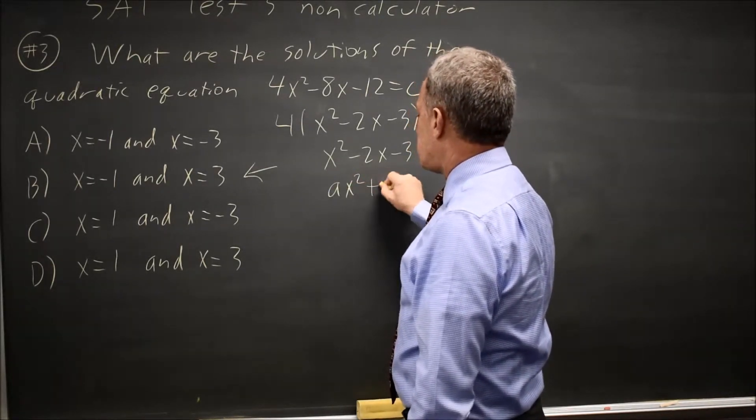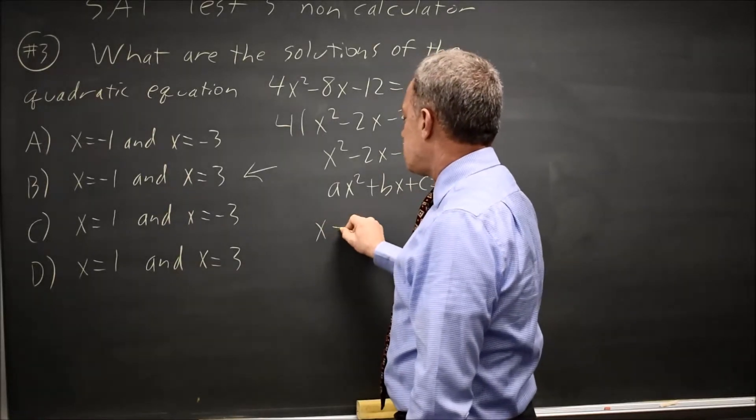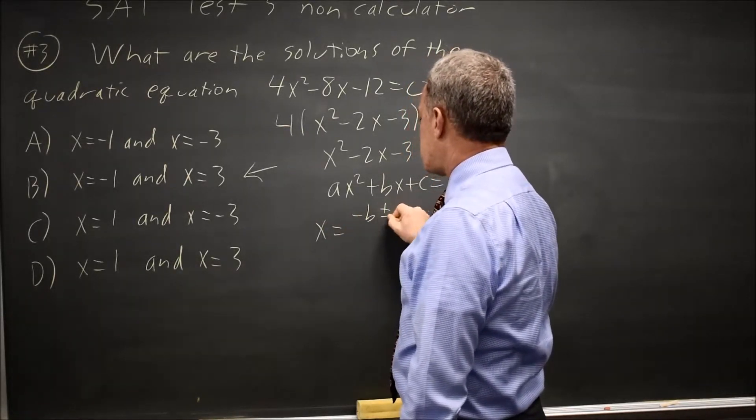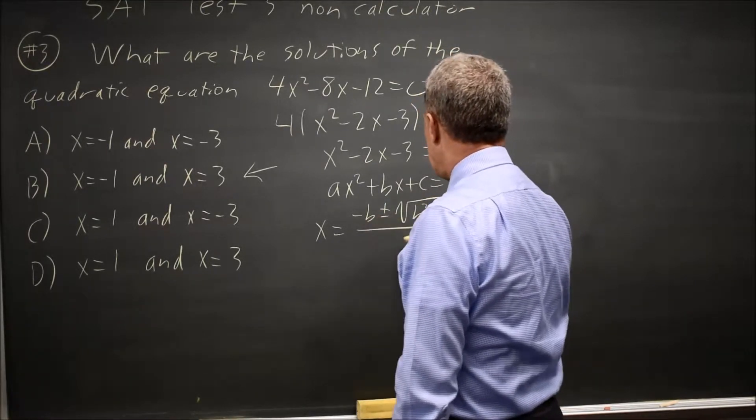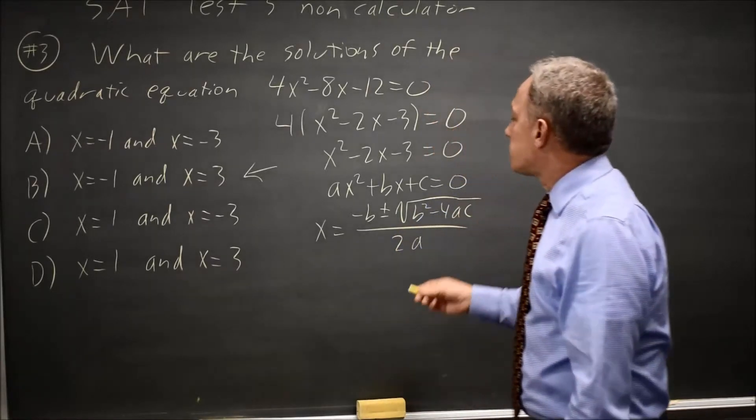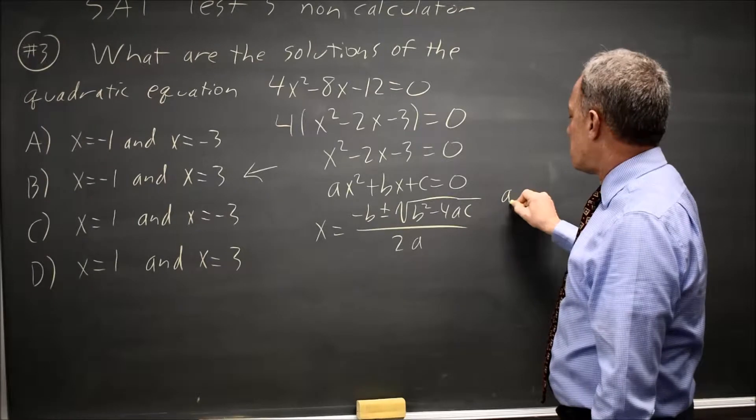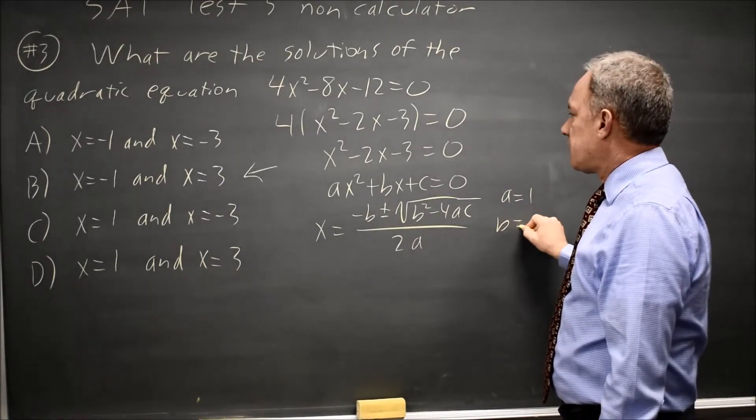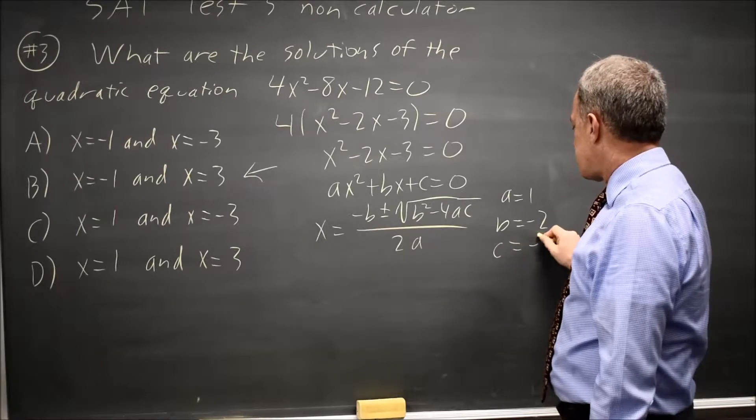Sometimes you will have to use the quadratic formula, so it's worth going over that formula here. If you have ax squared plus bx plus c equals 0, then x equals negative b plus or minus square root b squared minus 4ac all over 2a. In this particular equation, a is the x squared coefficient, and that's 1. b is the x coefficient, and that's negative 2. And c is the constant, and that's negative 3.